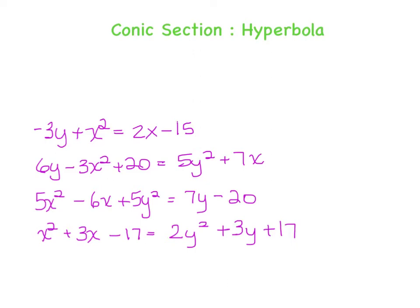So in this first one, I see that I only have one squared term, so that is obviously a parabola. In this second one, if I were to add the 3x over here with the y and add the 6y over, I would have 5y squared plus 3x squared. That means I definitely am not a parabola. And because the coefficients are different on the squared terms, this is going to be an ellipse.